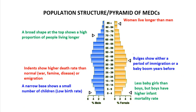In the population structure of an MEDC, there is low birth rate. A narrow base shows a small number of children and a low birth rate. There are also fewer baby girls than boys, but boys have a higher infant mortality rate. Moving to the economically active, it does not bulge out like that of LEDCs. An indent shows higher death rate due to famine, war, disease or emigration, while bulges show either a period of immigration or a baby boom years before.